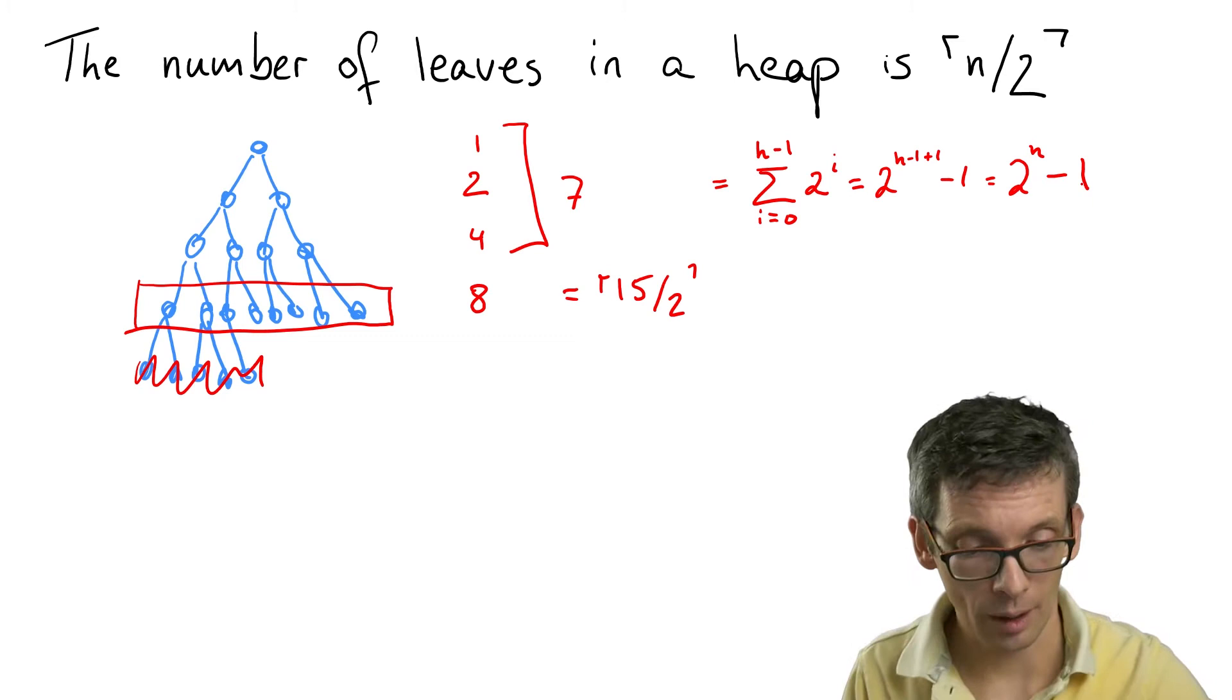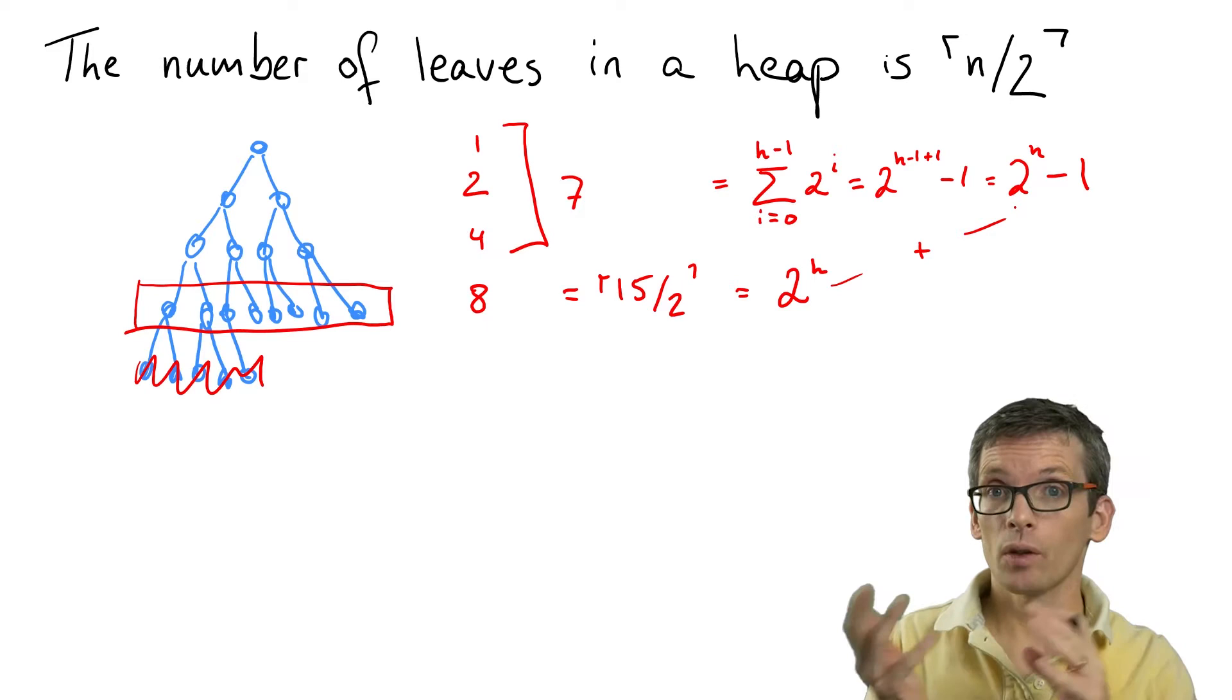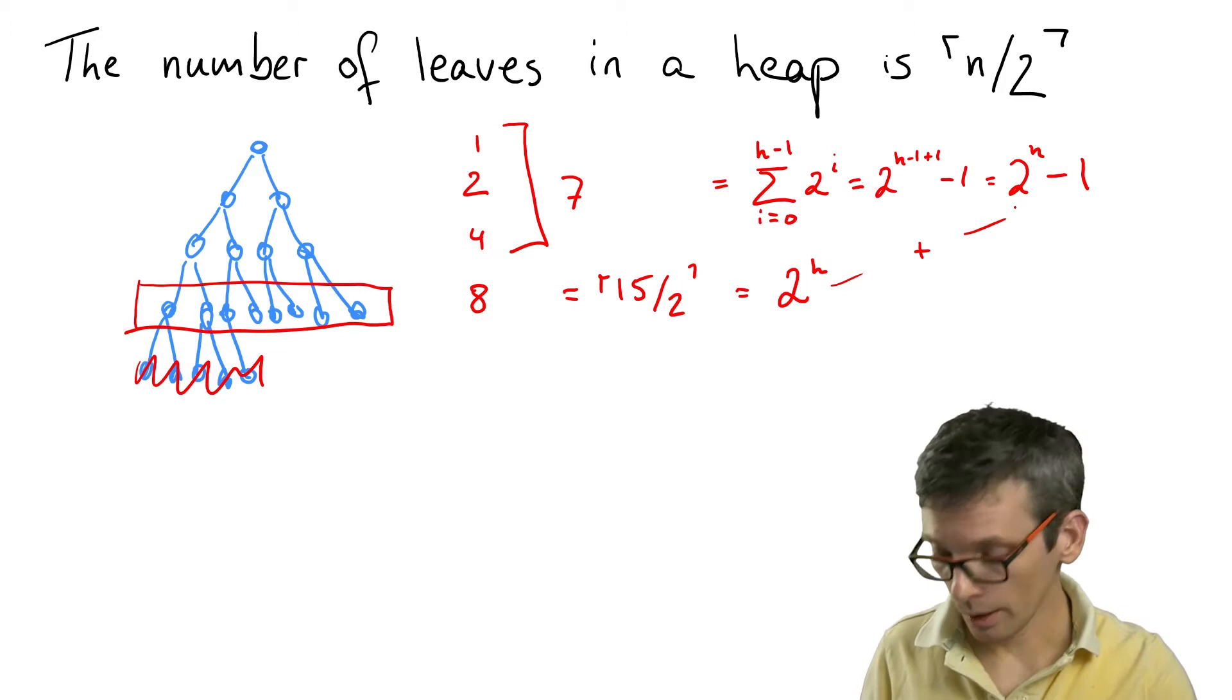In contrast the number of leaves, so per level the number of nodes doubles, so this is simply two to the h. Now the number of nodes overall is two to the h plus two to the h minus one. And two to the h is half of this rounded up.